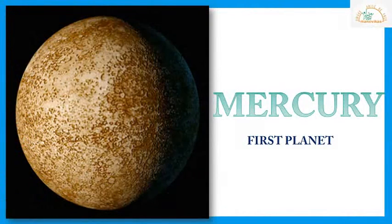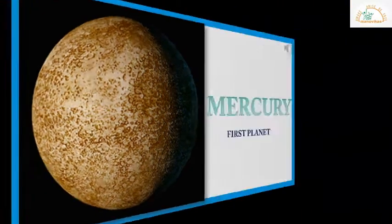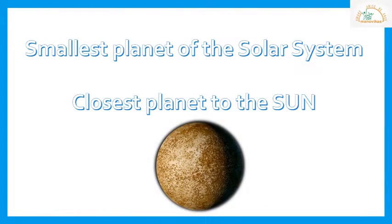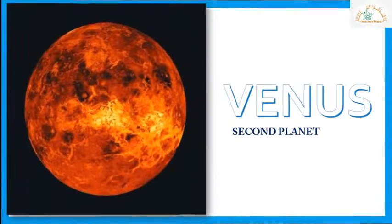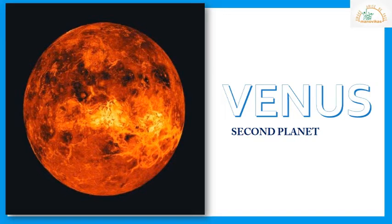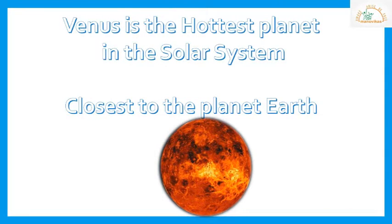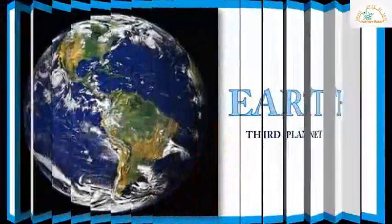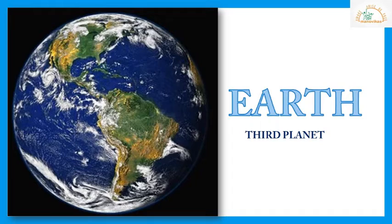Mercury is the first planet in the solar system. It is the smallest planet and the closest to the sun. Venus is the second planet in the solar system. It is said to be the hottest planet and it is closer to the planet Earth. Earth is the third planet in the solar system.